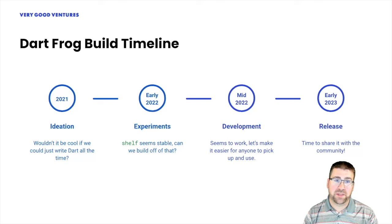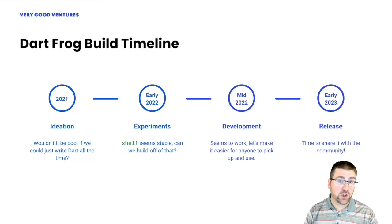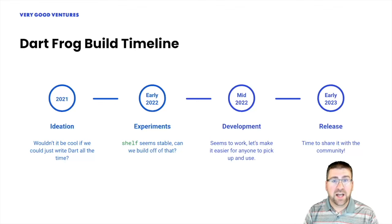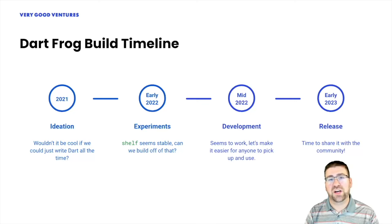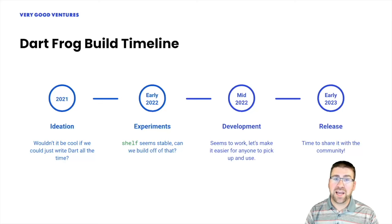Looking at the timeline, this wasn't something we just threw together. The idea for a backend framework using Dart was coming up in a few client projects back in 2021. In early 2022, we were able to start doing some experimentation with creating the framework, mostly for some proof of concepts. Then we turned that into full development in the second half of 2022, as it became a key piece of the Flutter News Toolkit. It was finally released to the public in January 2023, but was still in a pre-1.0 state until August. We did a lot of internal iterations to ensure it was as stable as possible API-wise before release.